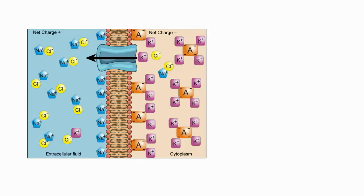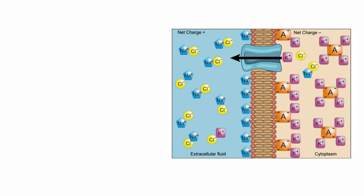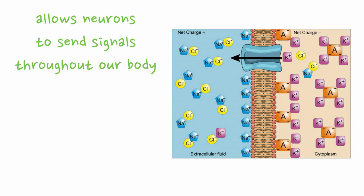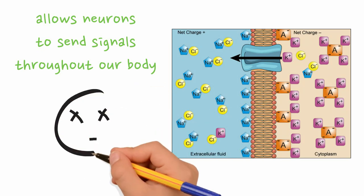Another classic example is the separation of sodium and potassium ions across cell membranes. This separation of oppositely charged ions allows neurons to send signals throughout our body, without which we would not function.